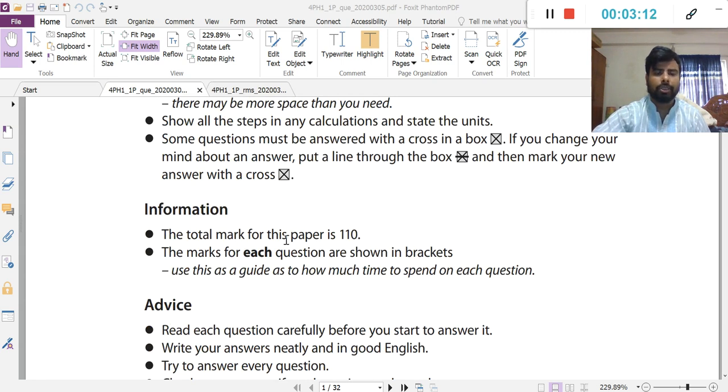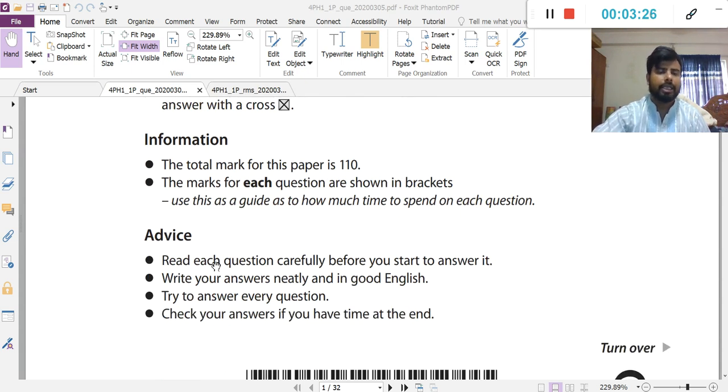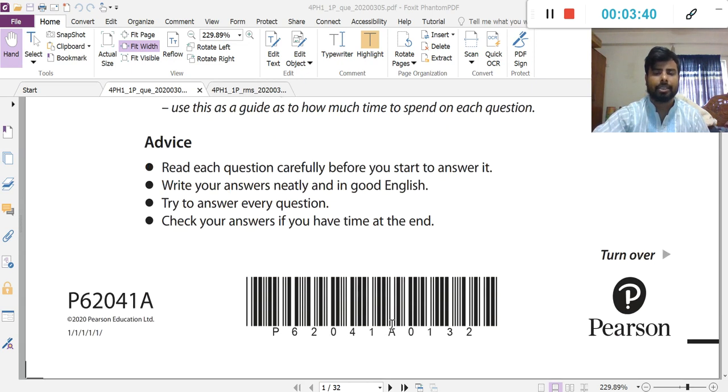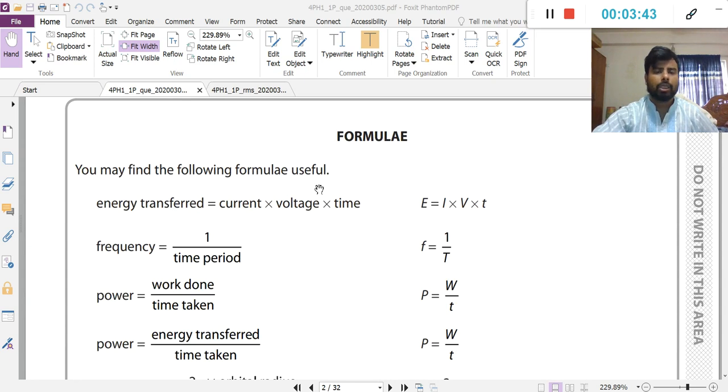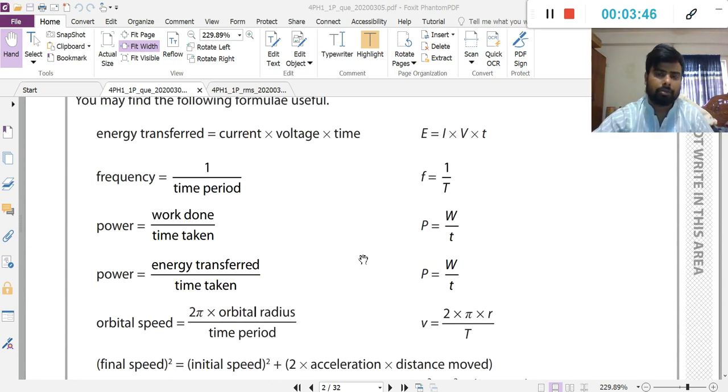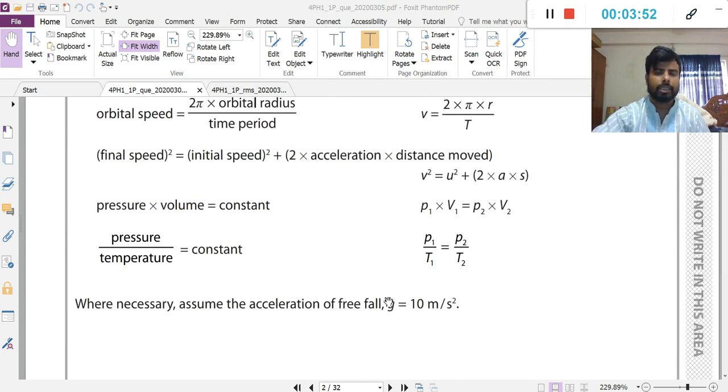Total mark for this paper, paper 1, is 110. The marks for each question are shown in the brackets. Use these as a guide as to how much time to spend on each question. Read each question carefully before you start to answer it. Write your answer neatly and in good English. Try to answer every question. Check your answer if you have time at the end. There are some formulas. When you solve any mathematical problem, first check your formula sheet.